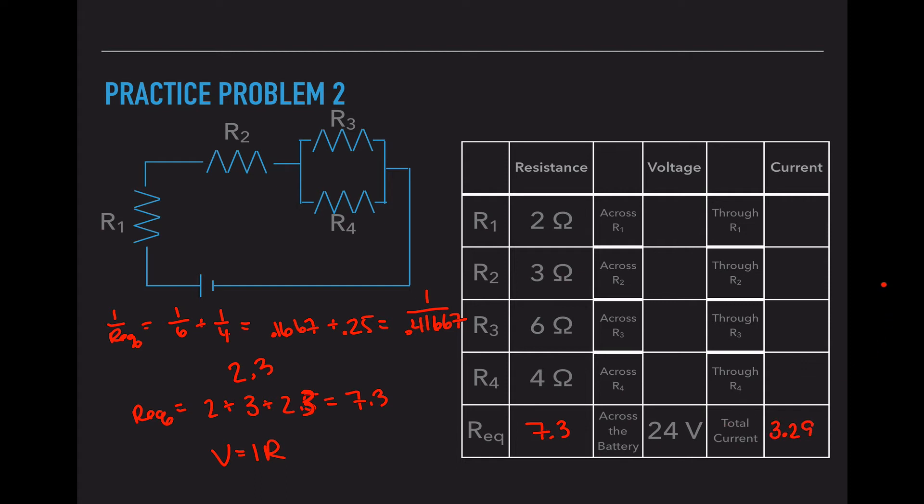Now I have a current of 3.29 having to travel through two of my resistors. Every electron must travel through R1 and must travel through R2. So I can plug 3.29 in at R1 and R2. Now I have two unknowns here. So I can't solve for anything quite yet. But I can go back and solve for my voltages.